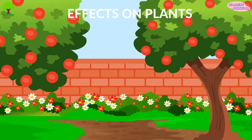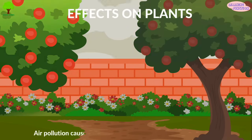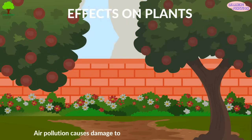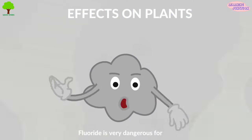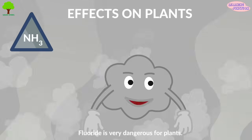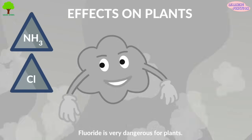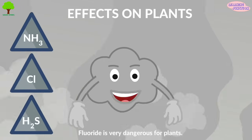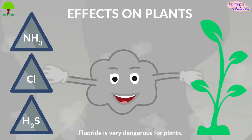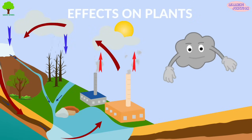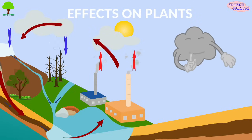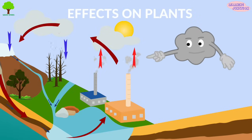Effects on plants: air pollution causes damage to trees, vegetables, fruits, and flowers. Fluoride is very dangerous for plants. Ammonia, chlorine, and hydrogen sulfide are harmful to whole vegetation. Air pollution brings acid rain. Trees die early and leaves get dry.